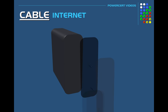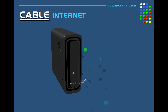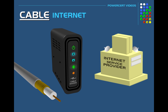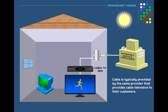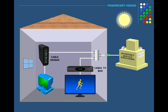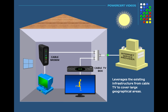Cable internet is a high-speed access technology that uses a cable modem with an attached coaxial cable, which provides a link to the internet service provider. Broadband cable is typically provided by the same provider that provides cable television, and it leverages the existing cable TV infrastructure to cover large geographical areas, especially here in the United States.